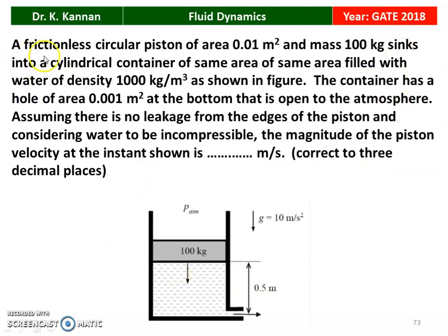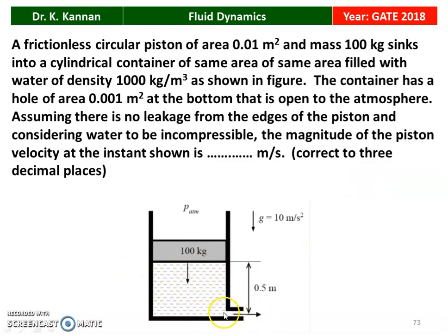Next question from the 2018 question paper. A frictionless circular piston of area 0.01 m² and mass 100 kg sinks into a cylindrical container of the same area filled with water of density 1000 kg/m³. The container has a hole of area 0.001 m² at the bottom that is open to the atmosphere. Assuming no leakage and incompressible water, with g = 10 m/s², the piston velocity is 1.456 meters per second.